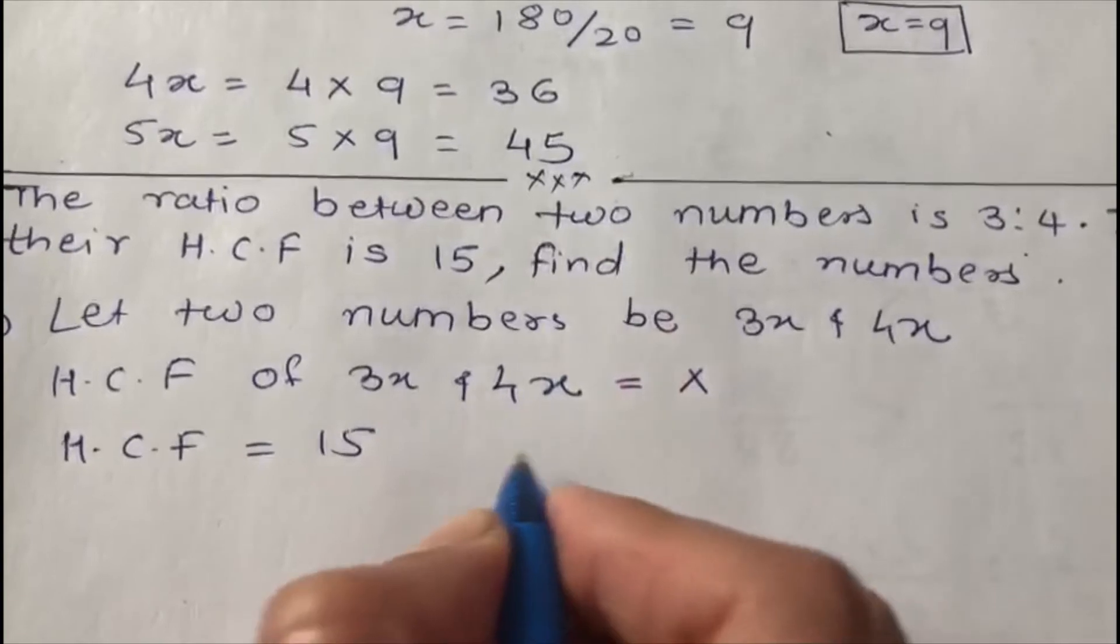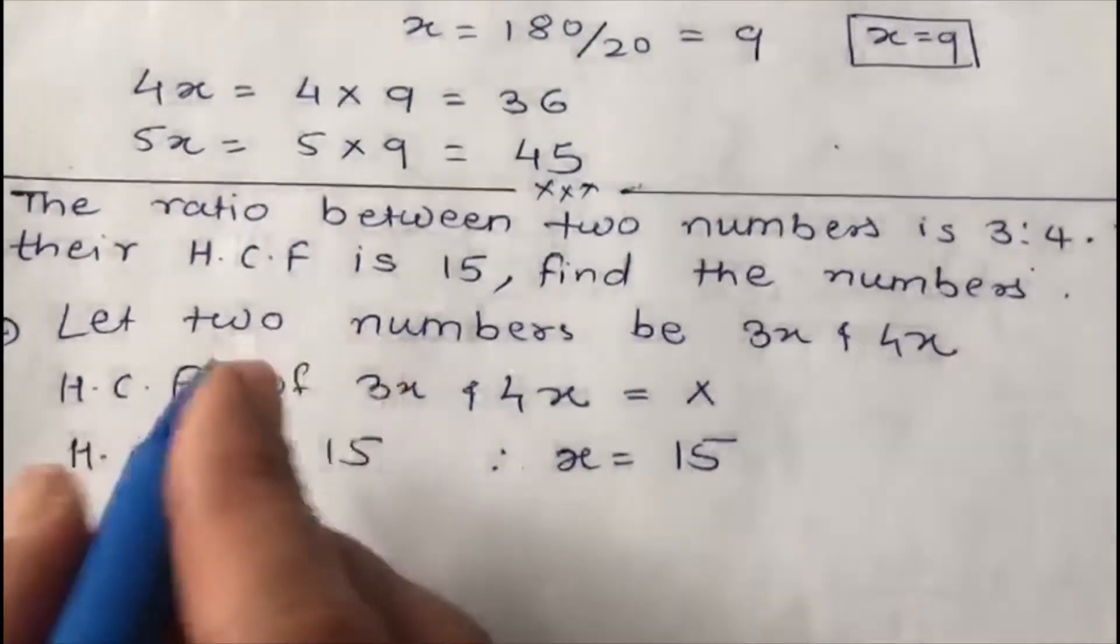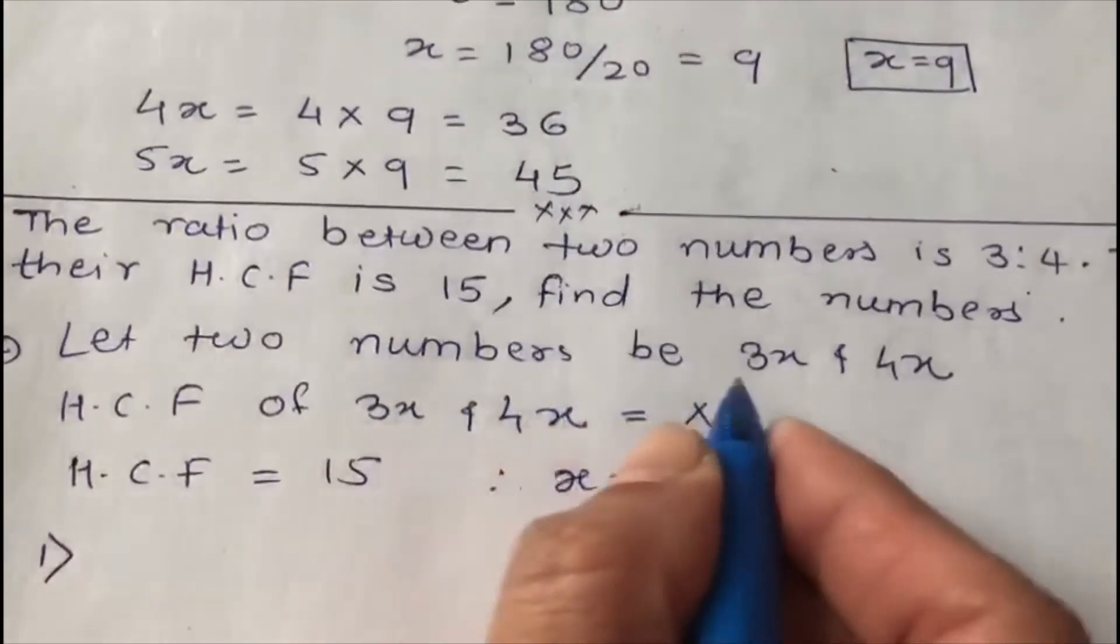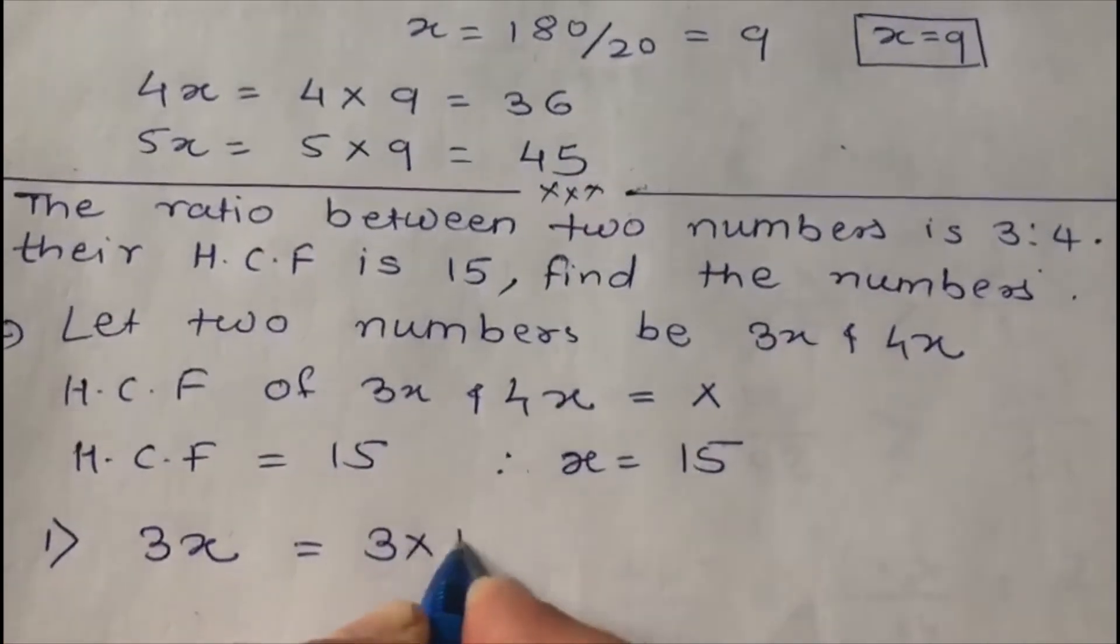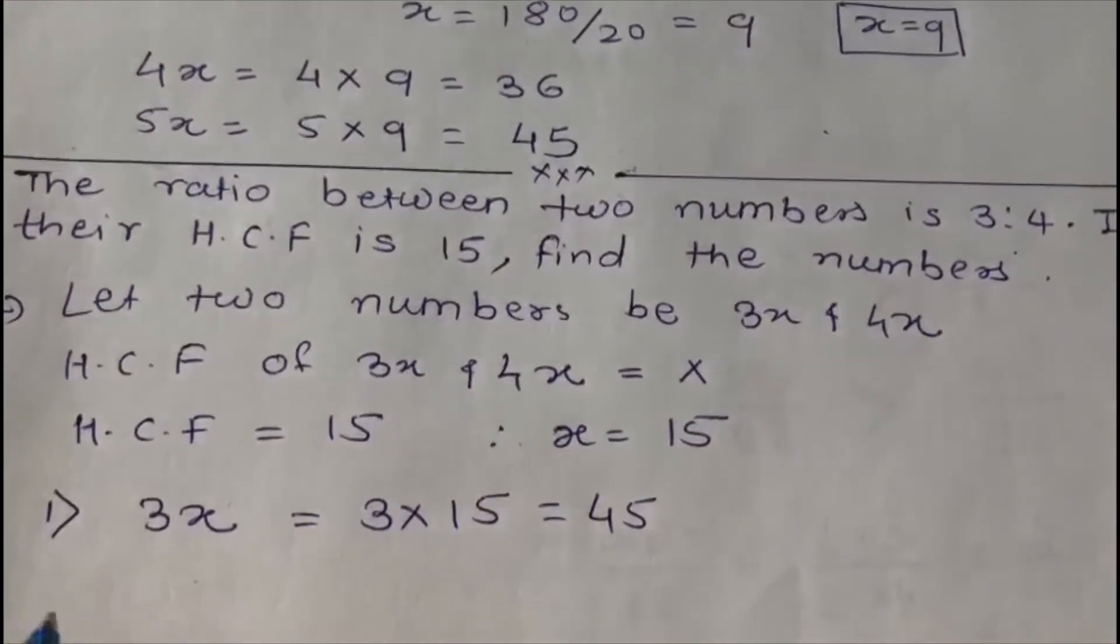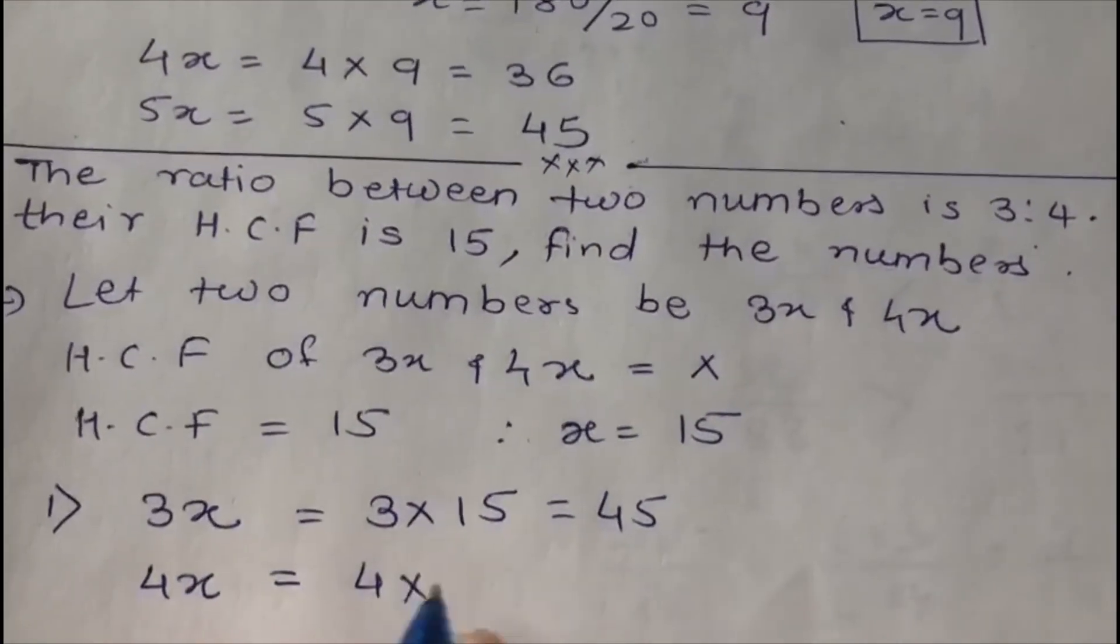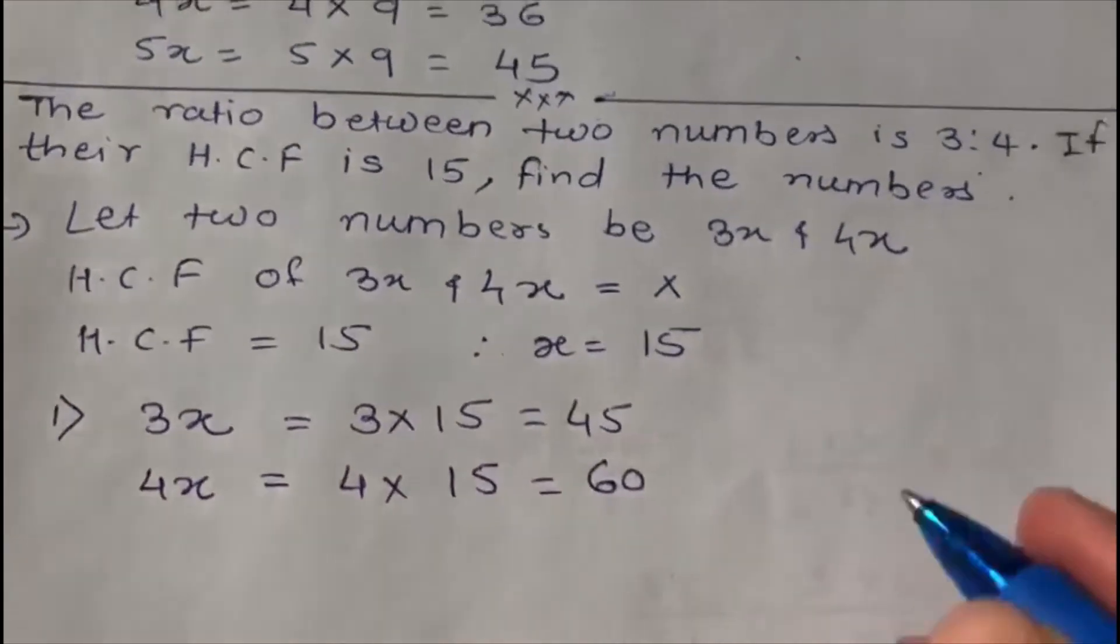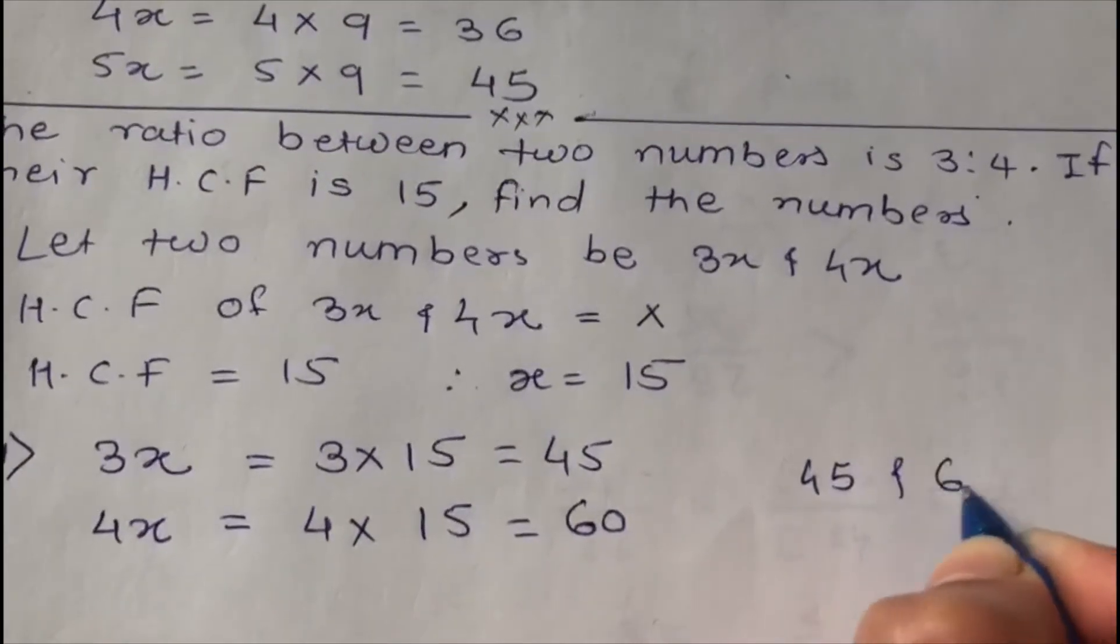That means x equals 15. What are those two numbers? So first one, we have assumed it as 3x, that means 3 times 15, it comes 45. And the other number is 4x, means 4 times 15, is 60. So those two numbers are 45 and 60.